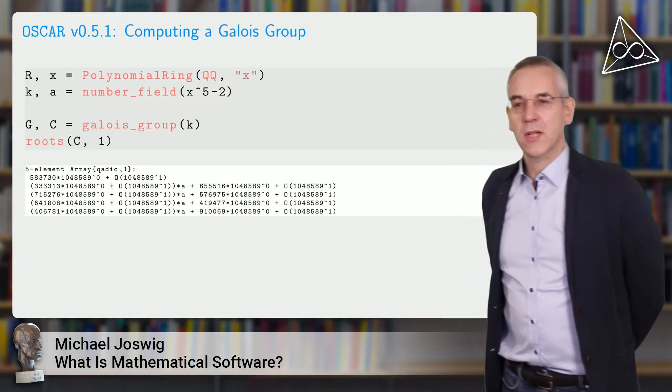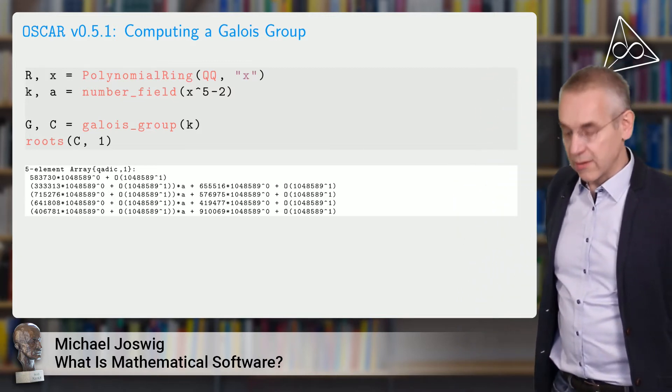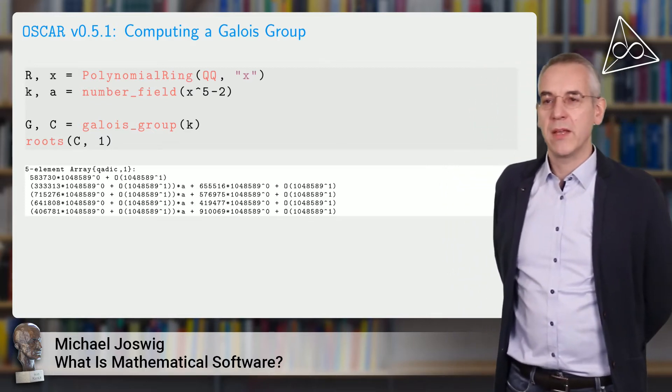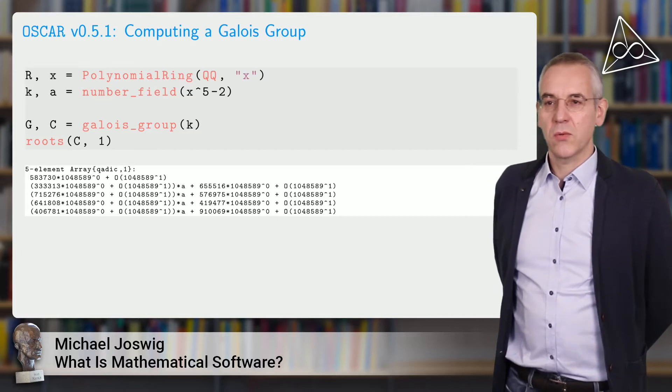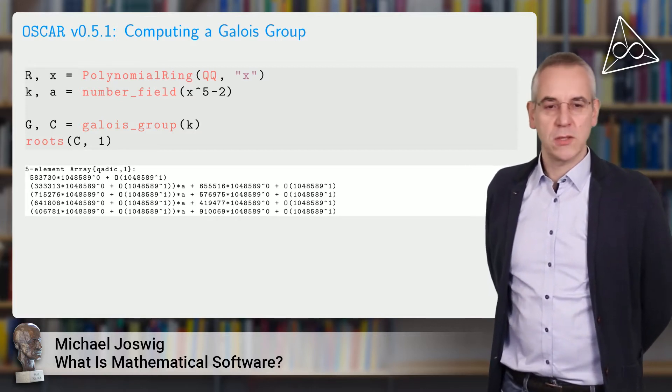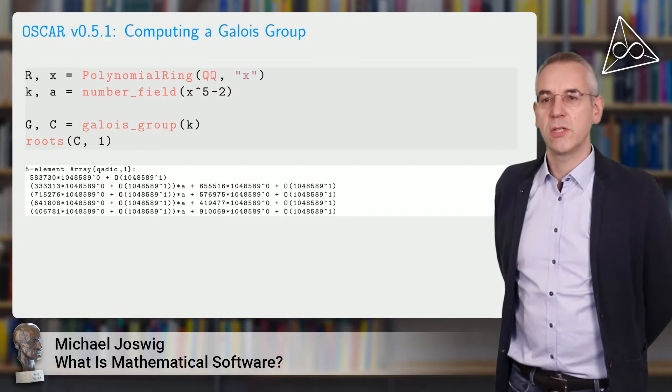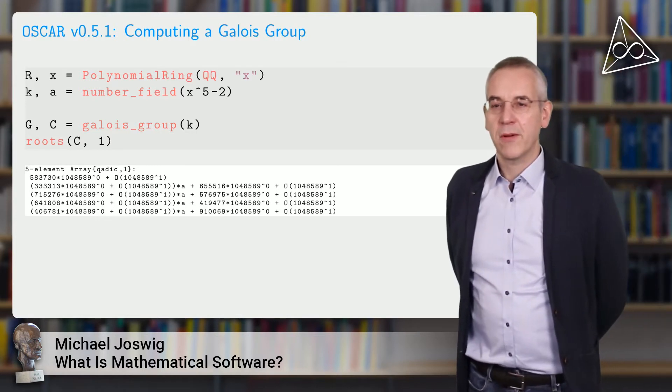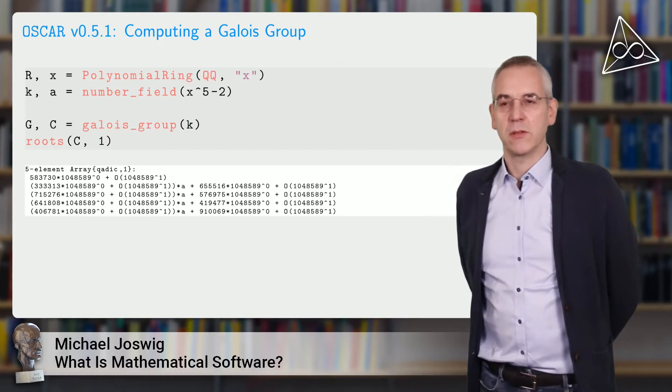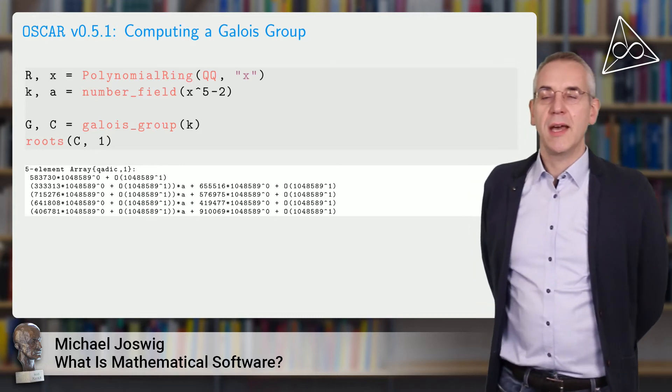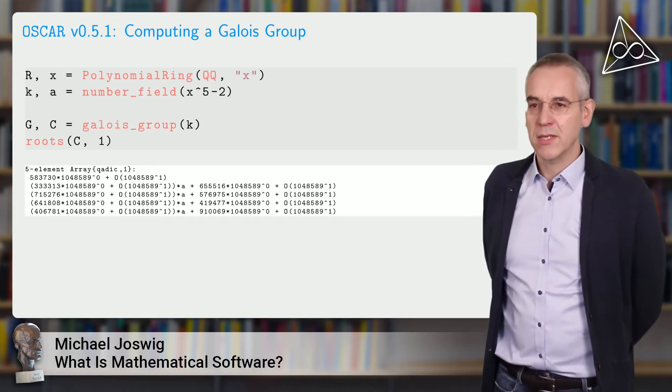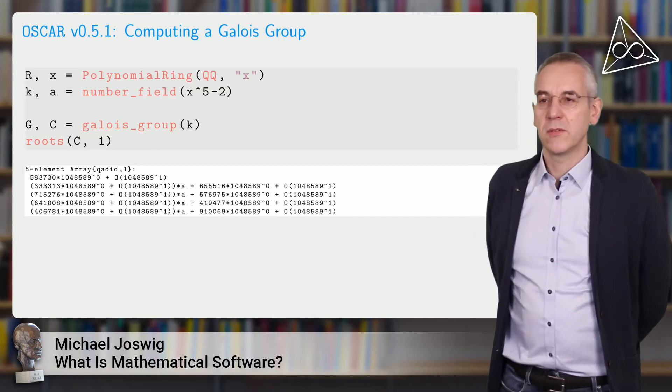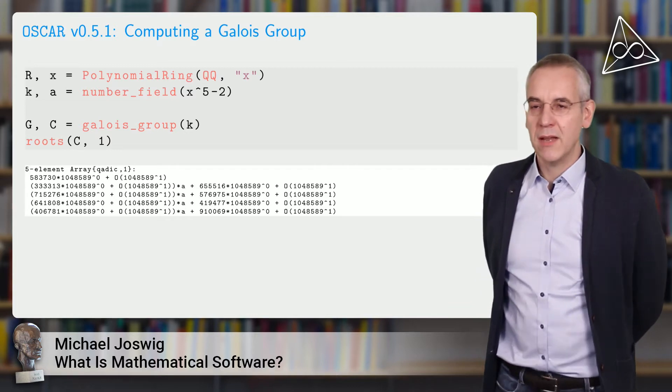And how does this work? Here in the first line, this is actually a system which is written in the programming language Julia. You really see Julia code here in the works. We construct a polynomial ring with coefficients in the rational numbers. That's qq in the indeterminate that we call x. That's a univariate polynomial ring. And from that we pick one of these polynomials, x to the 5 minus 2, and create the splitting field over the rational numbers. That's a number field that we get. That field is called k. And we also receive a primitive element which is called a.